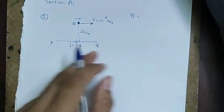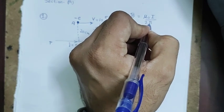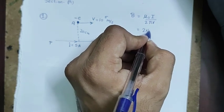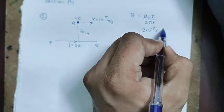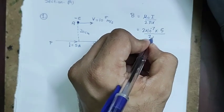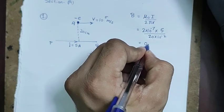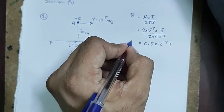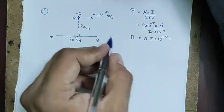The magnetic field at point A due to the straight wire is μ₀I / 2πr. The value of μ₀/2π is always 2×10⁻⁷. With I = 5 A and r = 20×10⁻² m, it comes to 0.5×10⁻⁵ tesla.